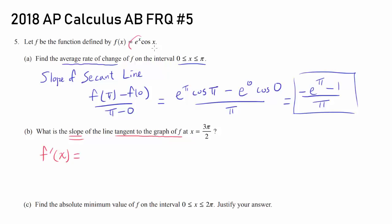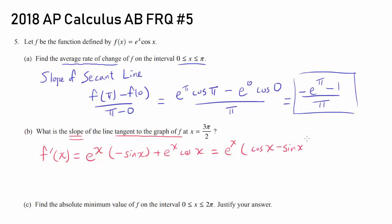Differentiating f prime using the product rule, we have e to the x times negative sine of x plus e to the x cosine of x. We can factor e to the x out to get cosine of x minus sine of x inside.